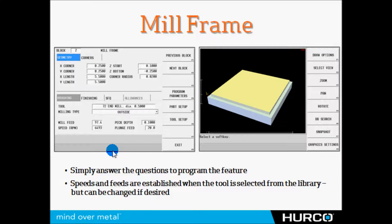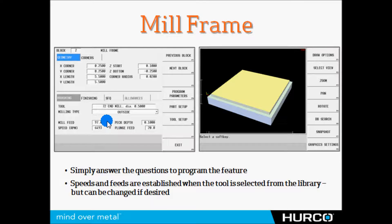Next, I'm going to mill a frame around the outside of the part. Again, I simply answer the questions: where's the corner — I pick one of the four corners and designate it the XY corner, then give it the length and width in X and Y. Then Z start at the rapid position, the final depth, corner radii if any, and pick the tool. The strategy is set to outside since I'm cutting the outside of this frame. Speeds and feeds come in with the tool, and the program is done for the mill frame.